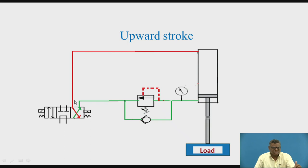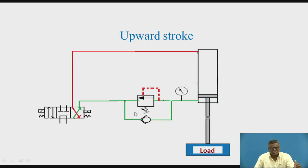The returning oil will come to port A, and A is connected to T at that time. Now the importance of the check valve can be observed. In the earlier situation when the piston was coming downwards, there was no use of the check valve. But in case of the return stroke, we are having the use of the check valve. P is connected to B, and the oil goes to the cylinder through the check valve only — it will not pass through the counterbalance valve but will pass through the check valve. It goes to the rod end and the piston is raised vertically upwards. The oil returning from the cap end goes to port A, and A is connected to T.